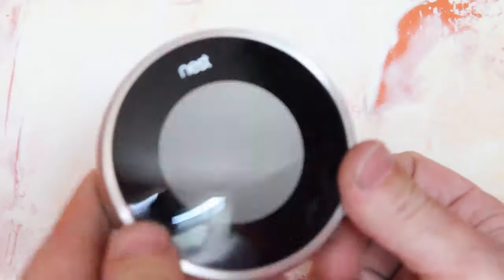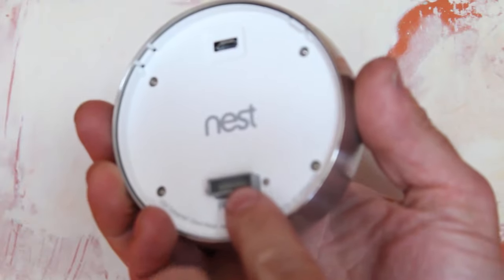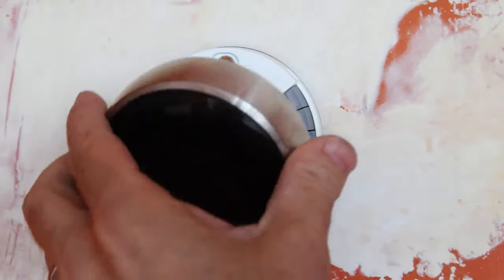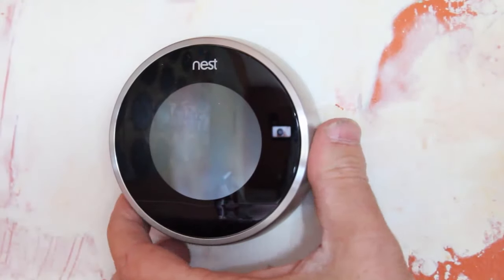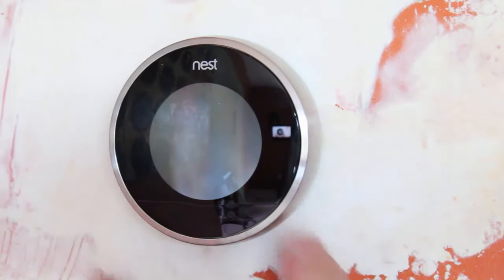So the back of the Nest display—this is the display—has all the tabs here. So what you do is you line it up, push it on. Once it's clicked and in place, and the Nest label is on the top, you're all done. Now what you need to do is turn the power on, either at the breaker or at your HVAC system. And then the Nest will walk you through the setup.